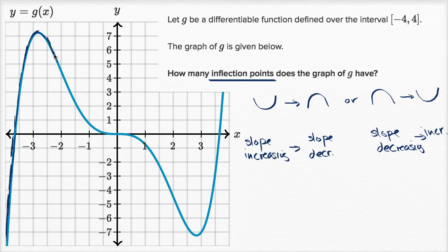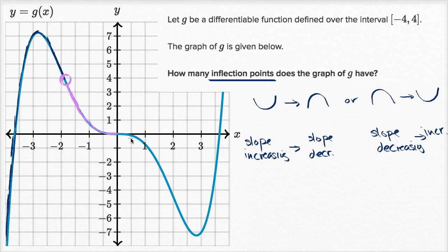The slope becomes more and more negative. Then right around here, it looks like it starts becoming less negative — our slope starts increasing, becoming less and less negative, and approaching zero. But then right over there, our slope begins decreasing again — becoming more and more negative. So something interesting happened there: we had a transition point.